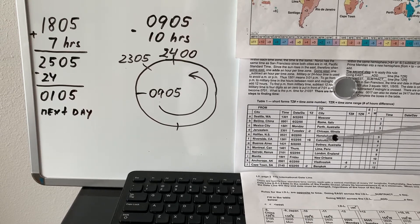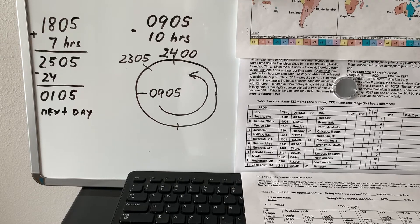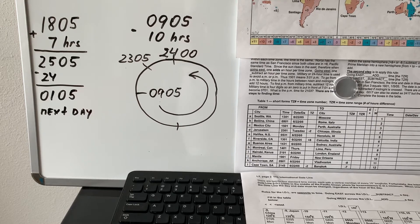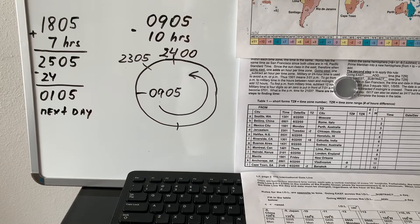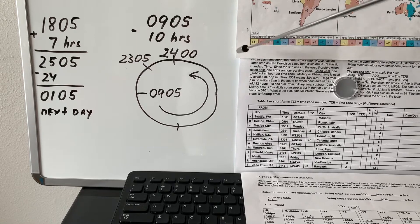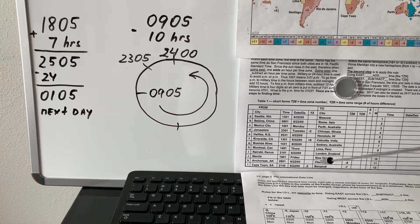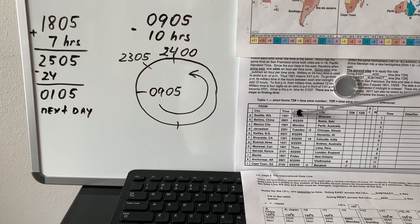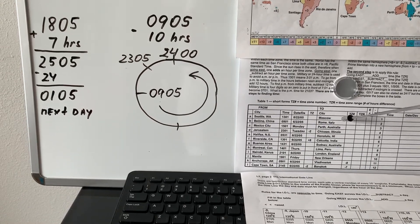Remember that when we pass midnight we have to change the date. For example, 2401 means one minute after midnight — you are already in the next day and must change the date. If you subtract and go back past midnight, you find your time and change the date to the previous day. For example, Seattle at 1301 — you have the date and need to find the time in Moscow.